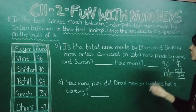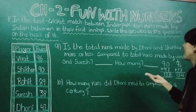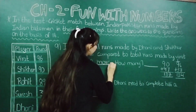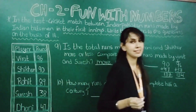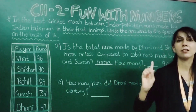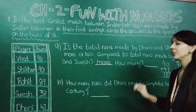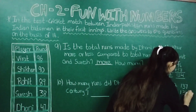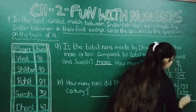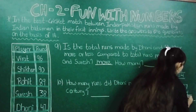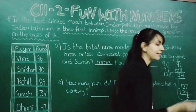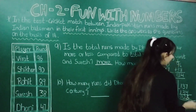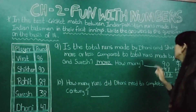Now here you can see: Dhoni and Shikhar scored 137, and Virat and Suresh scored 134. So it shows more — Dhoni and Shikhar scored more than Virat and Suresh. Now how many more? We will subtract 134 from 137. Now 7 minus 4 gives 3, 3 minus 3 gives 0, 1 minus 1 gives 0. So the answer is 3 more. Here we will write 3.